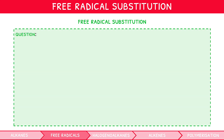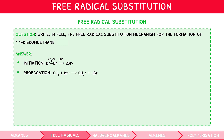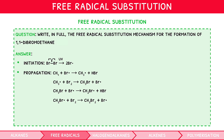Let's put this all together in an example question: write in full the free radical substitution mechanism for the formation of 1,1-dibromoethane. We would first write initiation showing the homolytic fission of the interbromine bond to form two bromine radicals, remembering to write UV above our arrow. We would then write propagation showing first the reaction of ethane with one of these radicals to form hydrogen bromide plus a CH3 radical. Then this reacting with diatomic bromine to form 1-bromoethane plus a bromine radical. Since the question asks for 1,2-dibromoethane, we must repeat these equations using this product — first showing the reaction with a bromine radical to form another hydrogen bromide and CH2Br radical, then this reacting with diatomic bromine to form 1,2-dibromoethane plus a bromine radical.